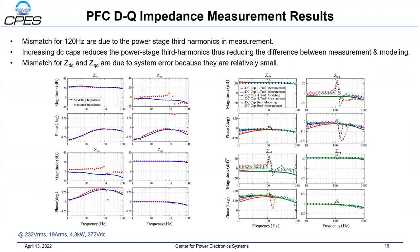The DQ impedance of the PFC is measured using the setup and procedure described previously. This figure overlays the modeling and experimental measurement results. The modeling results match well with the experimental results except for around 120 Hz, especially for the off-diagonal terms. This is because the third harmonic components on the AC side are not considered in the model, while in the measurement, the third harmonic response resulting from the fundamental components through frequency coupling is added when measuring the response. This figure shows that increasing the DC capacitance reduces the power stage third harmonics, therefore reducing the discrepancy between measurement and modeling results. In general, the mismatch for ZDQ and ZQD is mainly due to systematic error because they are relatively small.